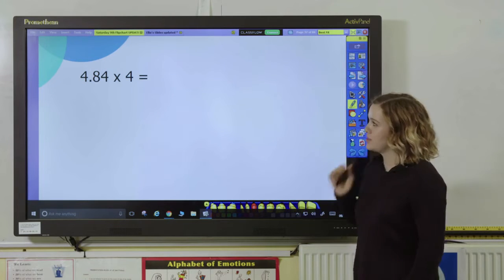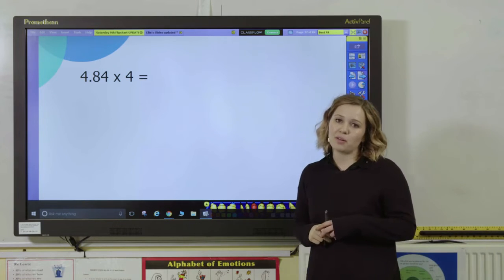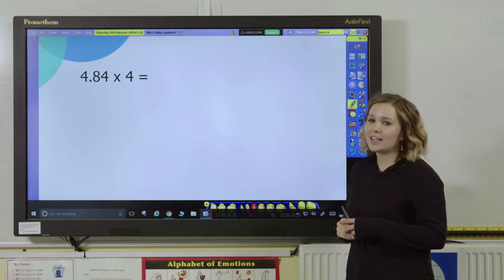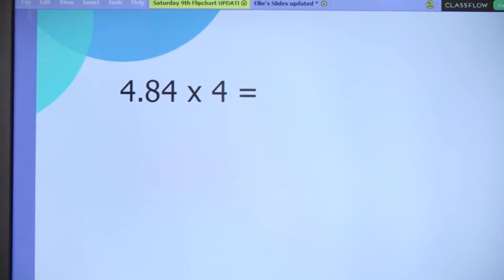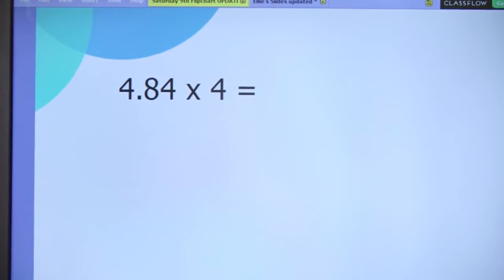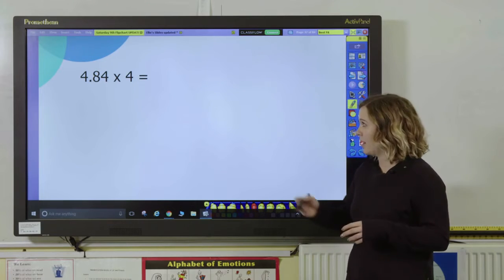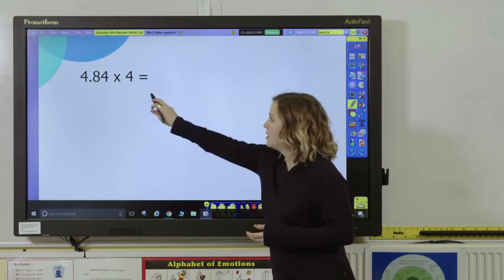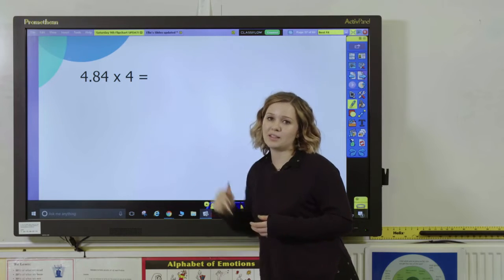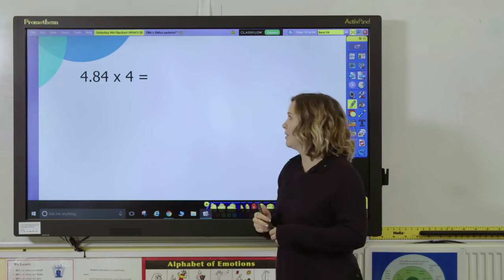Let's look at another question: 4.84 multiplied by 4. Now again, this time ask your pupils, do you think we need to do this using a formal method or can we use our knowledge of number facts? I would suggest that you could have a go at this using number facts and your knowledge of doubling again. When we multiply something by 4, it's the same as doubling it and doubling it again.